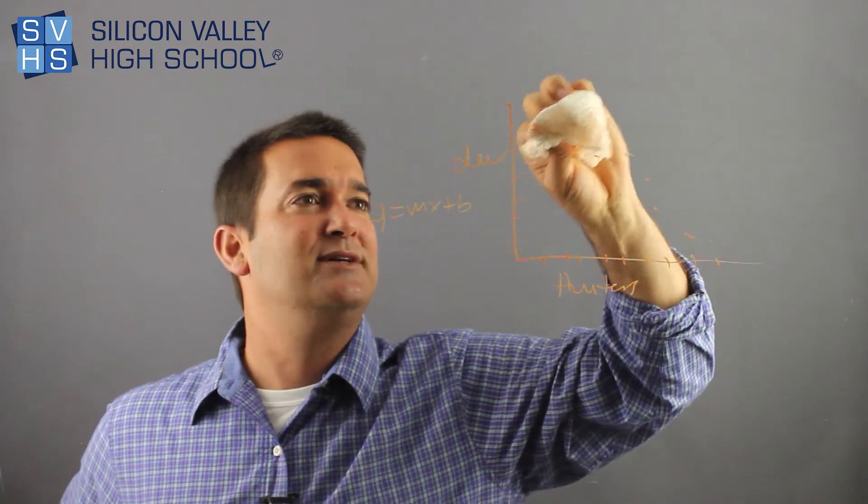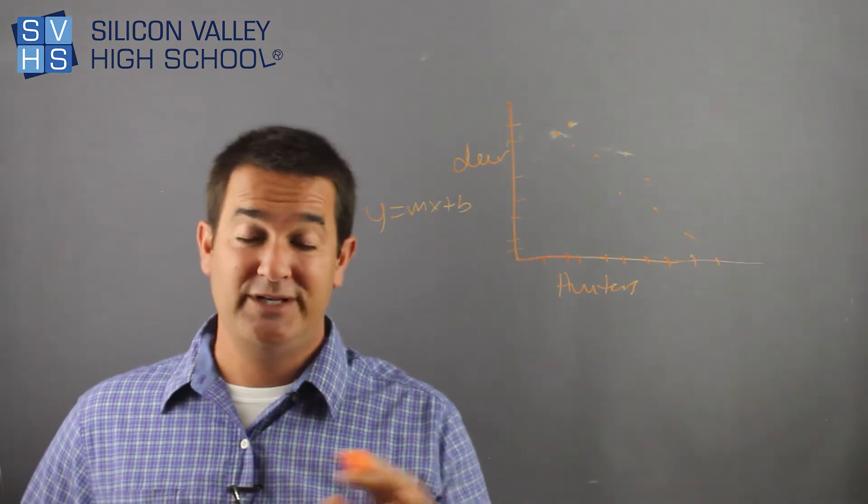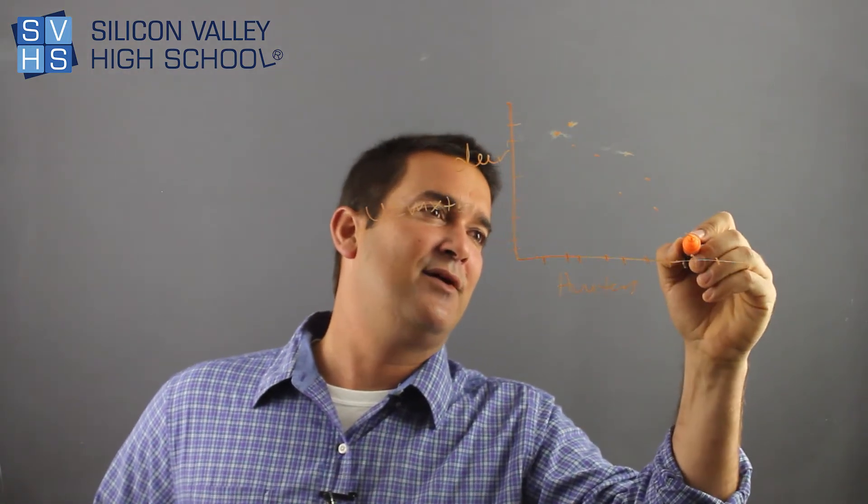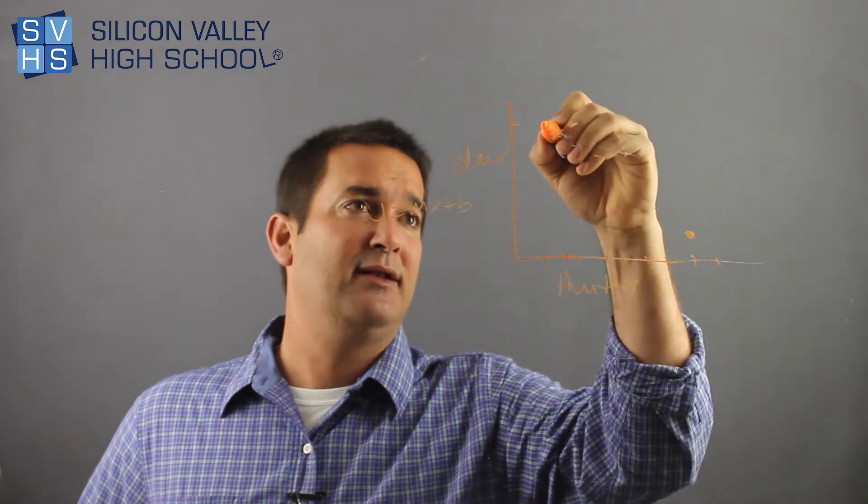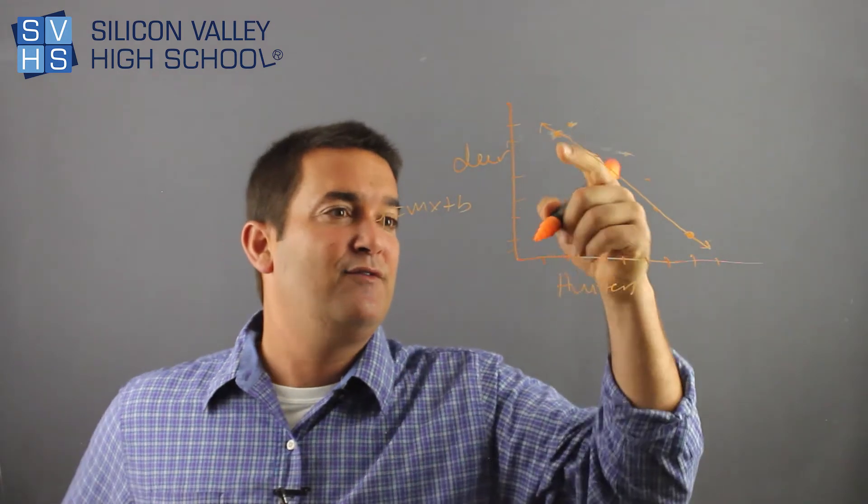So what I would do is, I would pick two points that closely represent the overall trend, and I would only do my math from there. So let's say, okay, I'm looking at this. I honestly think this point and this point - that's, come on, honestly, that's pretty close, right?